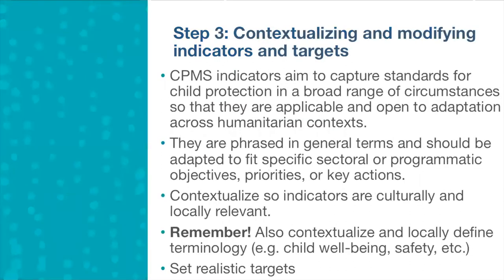The last step is to contextualize and modify the indicators as well as the targets listed in the Child Protection Minimum Standards indicator table. The CPMS indicators aim to capture standards for child protection across a broad range of circumstances so they are applicable and open to adaptation across humanitarian contexts. As a result, they will need to be contextualized to your specific context if necessary, as they are often phrased in general terms and should be adapted to fit specific sectoral or programmatic objectives.